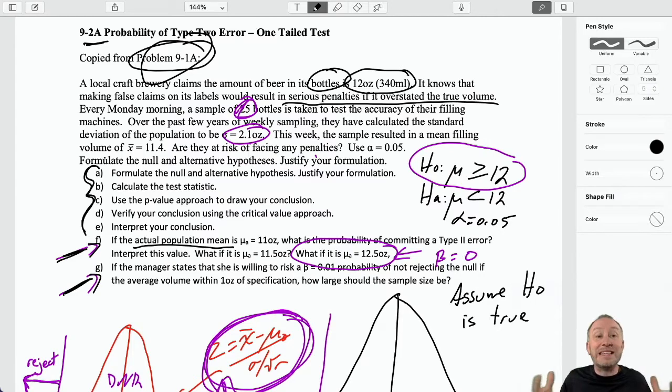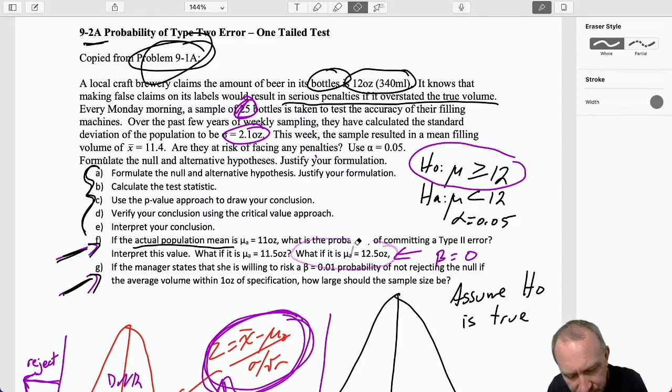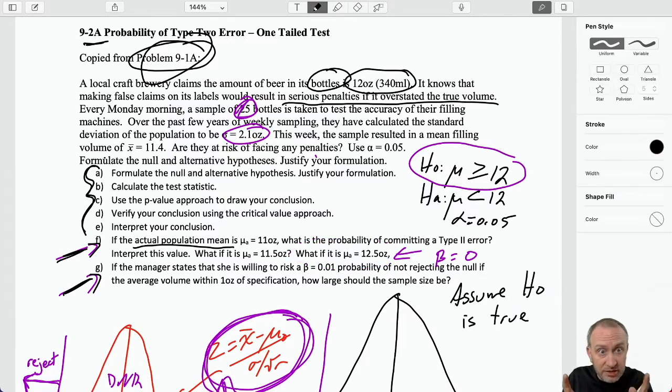So the whole purpose of that exercise is really to give us some idea, some understanding, of how our exposure to a type 2 error changes, and our power of our test, that is, correctly rejecting a null hypothesis, how that changes with the proximity of the true value when it satisfies the alternative, when it gets closer to that hypothesized value.